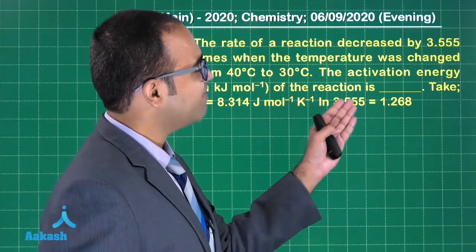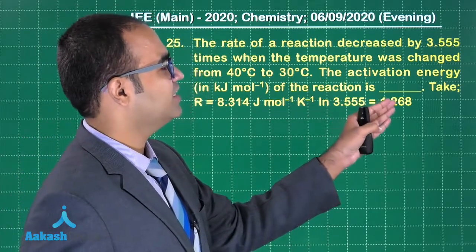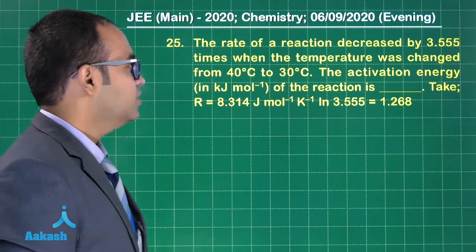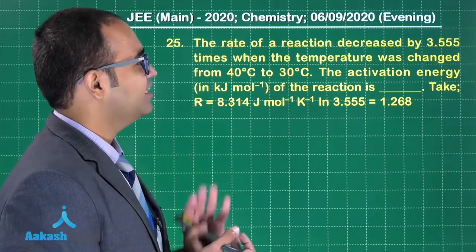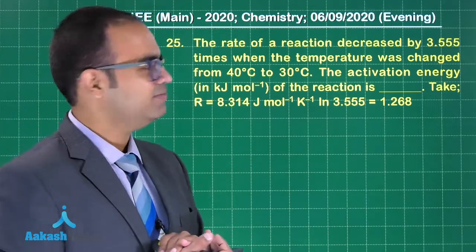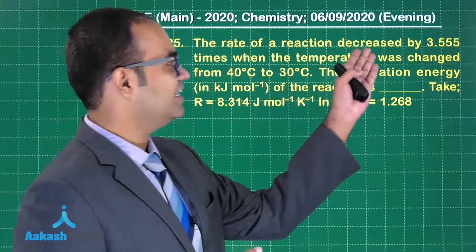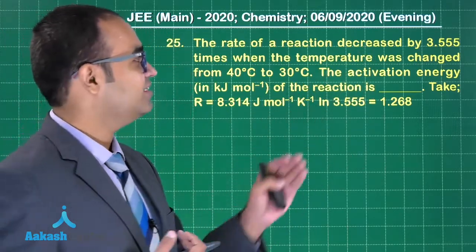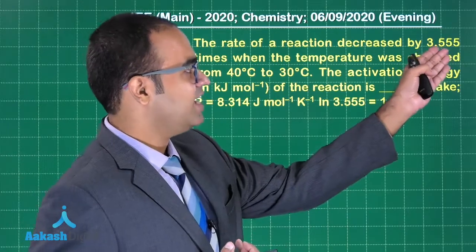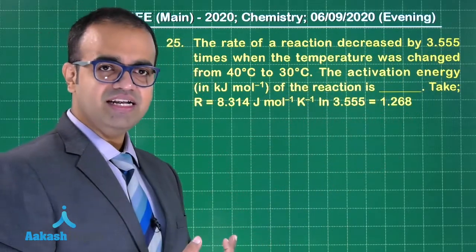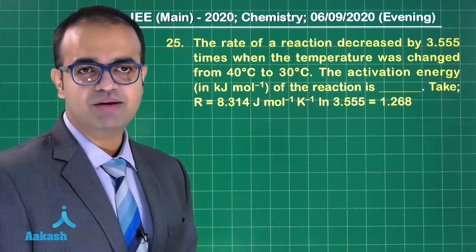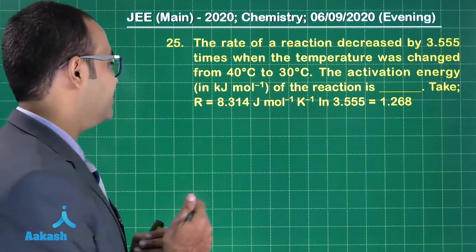This question is based on Arrhenius equation. Here they mentioned 'decreased', so if by decrease of 10 degrees it is decreasing by 3.555, if you are increasing by 10 degrees it will also increase by 3.555.